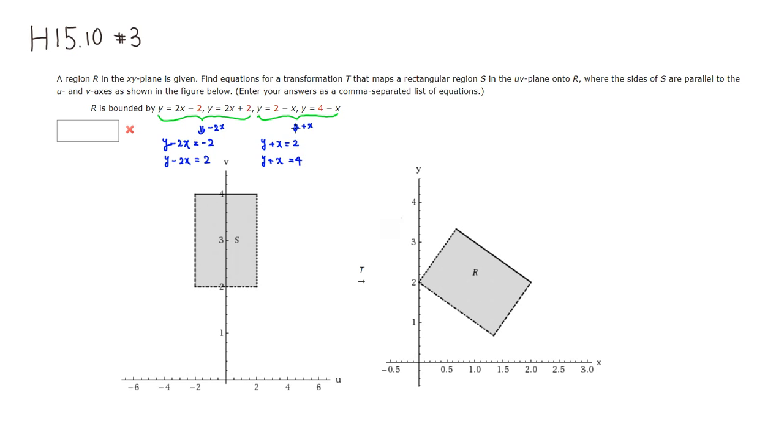Then what we can do is, looks like u has to go from negative 2 to positive 2. So we can let this to be u, so it goes from negative 2 to positive 2. And we can let v be this. So the equation is going to be u equals y minus 2x, and v equals y plus x.